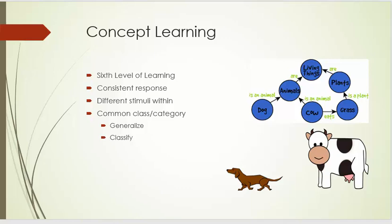Concept learning is the sixth level of learning, and it is a consistent response to different stimuli within a common class or category. It is our ability to generalize and classify. For instance, in this image over here, we have living things, which leads to plants and grass, or animals, dogs, or cows, carnivores, or herbivores.